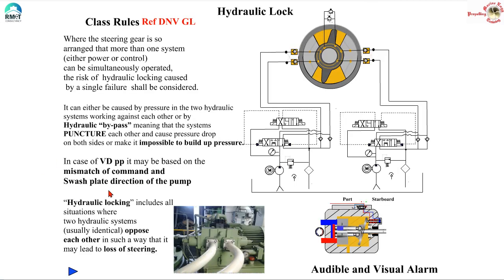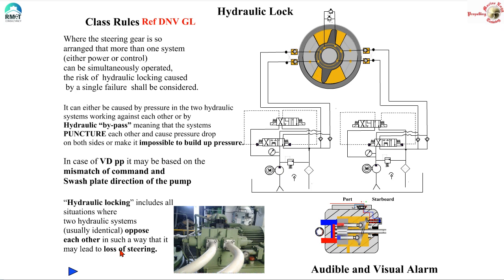To summarize: hydraulic locking includes all situations where two hydraulic systems oppose each other in such a way that it may lead to loss of steering. The end point to realize is any malfunction that leads to a loss of steering. Every ship will have its own way of picking up inputs from the various points and executing what is required by the rules.